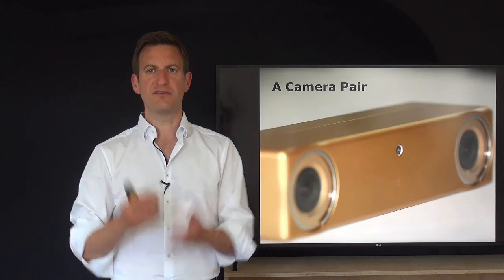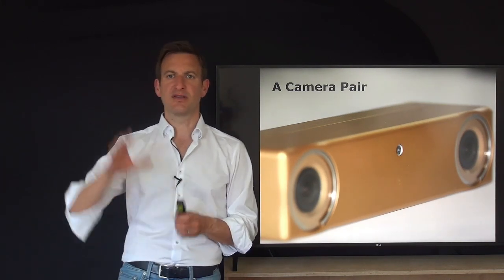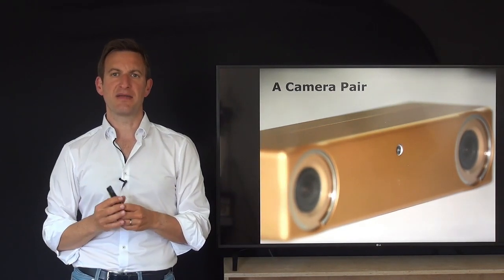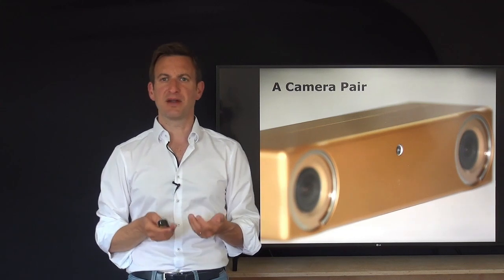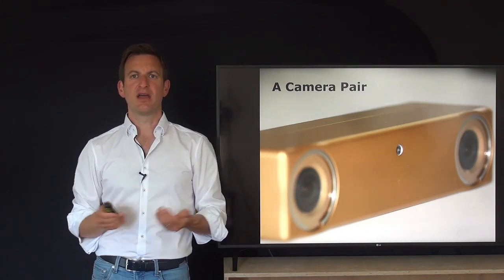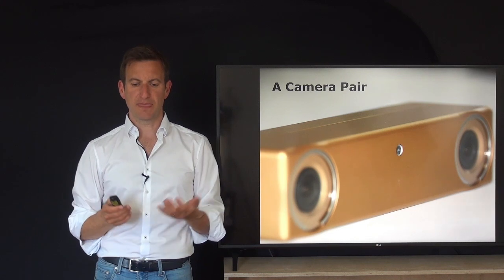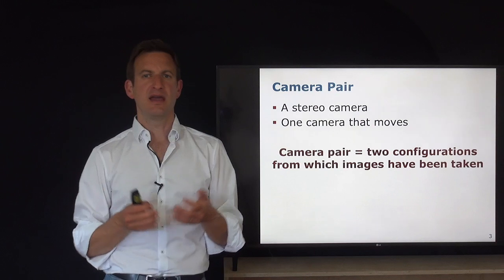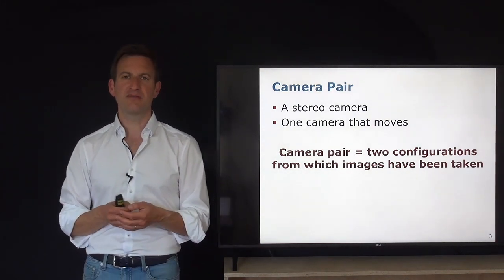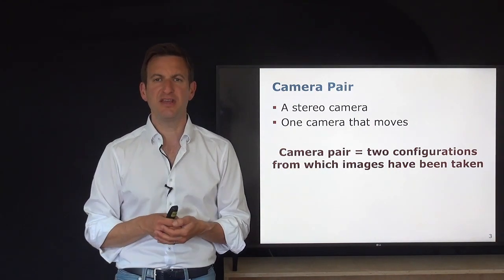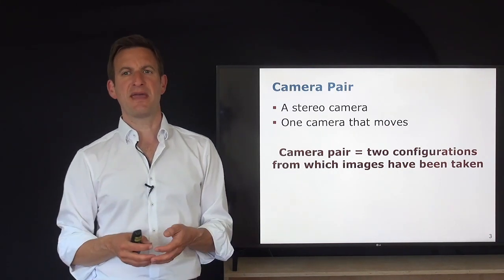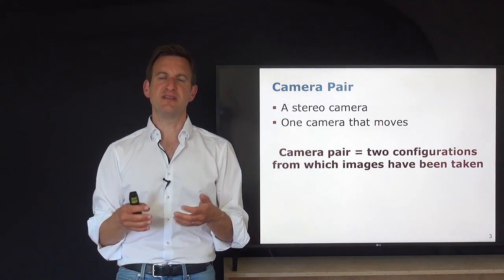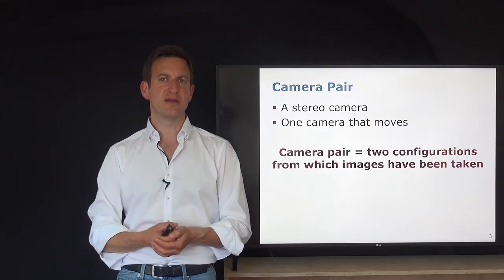A camera pair can also be just one physical camera moving through the environment — take one image from here, move the camera, and take a second image from the other side. A camera pair is not just a stereo camera. It can be one camera moving through the environment, or two cameras moving freely through the scene. We are talking about two configurations from which images have been taken, and we use those two images to estimate something.